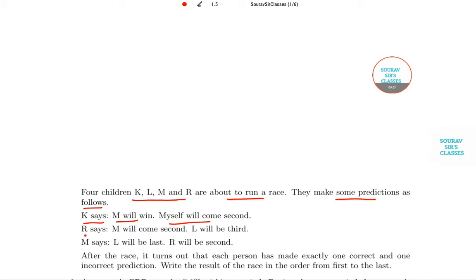Then R says M will come second and the candidate named as L will be the third. The prediction of M is L will be the last and R will be the second. So these are the three predictions. We need to take all these things into consideration while we will be solving the sum.